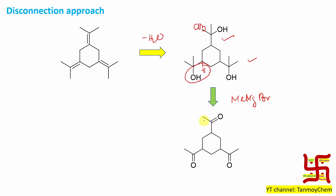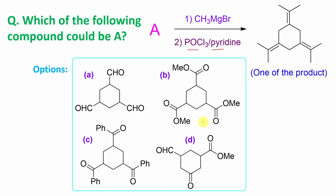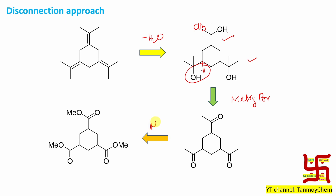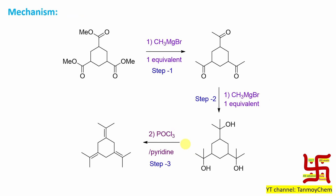And from where do you get this? Among the four options, if you look, there is a carbonyl compound. This is the A-star. From A-star, if you give another methyl magnesium bromide, you will get this product. Now let's watch the forward reaction — that will help you, I guess. So the first step is reaction of this 1,3,5-triester methyl ester.